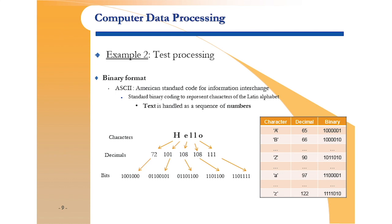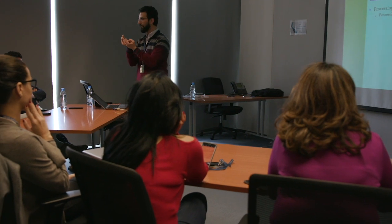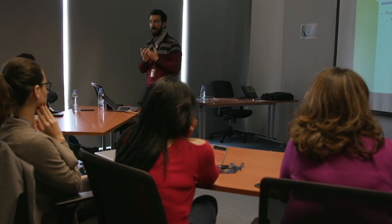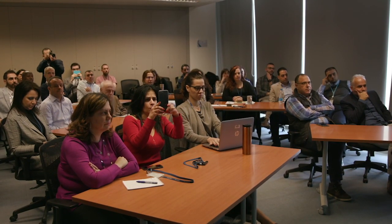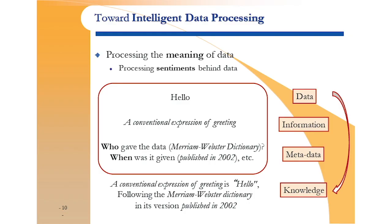I'd like the computer to not process 'hello' as a bunch of numbers, but to understand that 'hello' is a greeting in English — so it should respond accordingly. The most basic form is data. If we assign meaning to data, we call it information. A lot of people use both terms interchangeably, but for experts in data processing they are not the same: information is when we assign meaning to data.